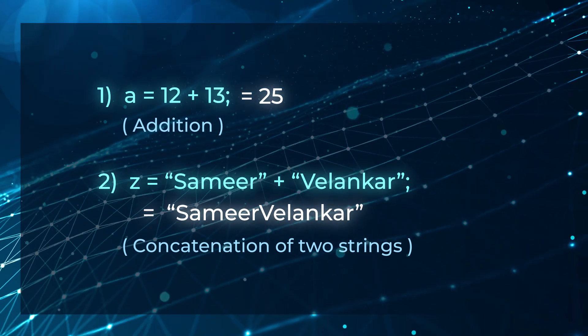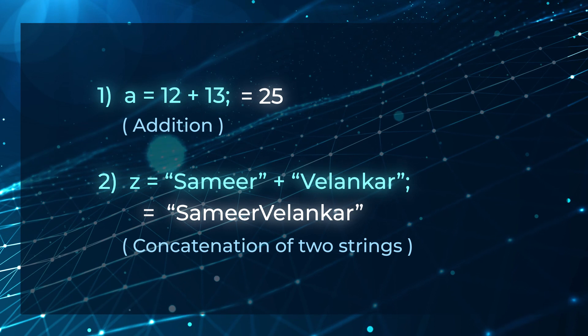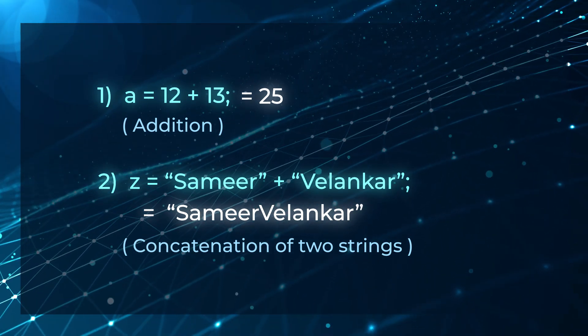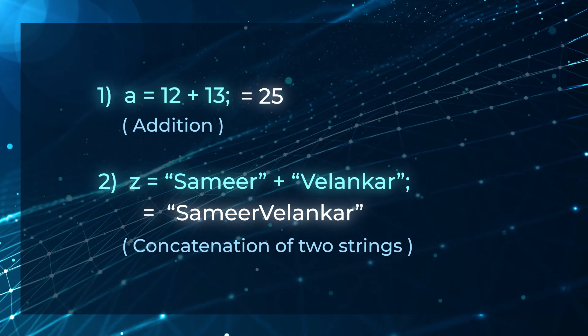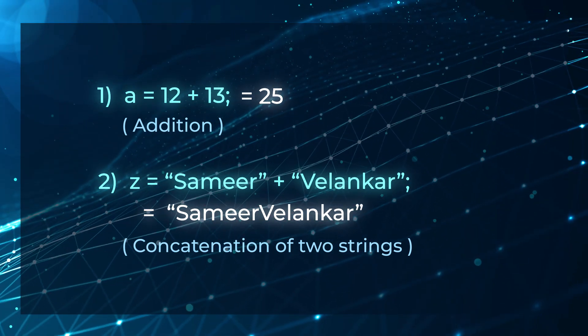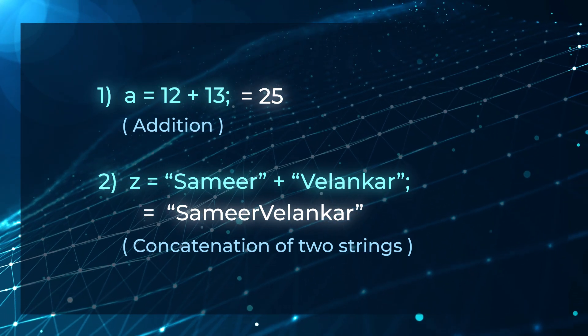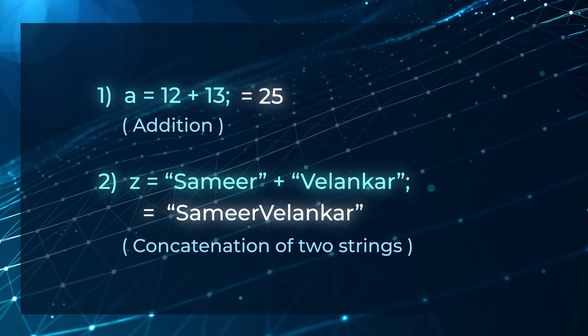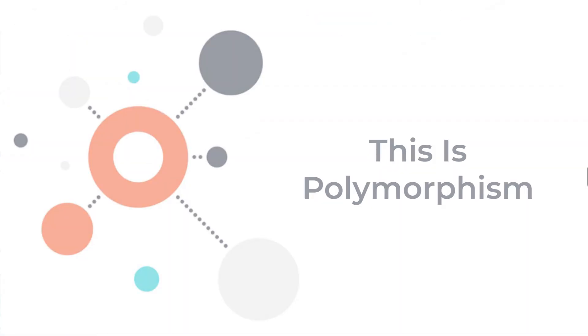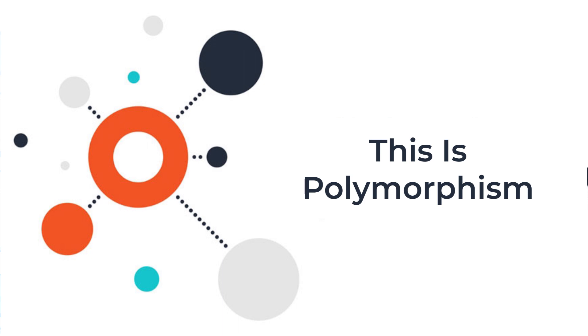Have a look at the two lines together. Both lines have the same operator, plus. But the meaning of the operator is completely different in these two different lines. In the first line, plus means add, but in the second line, plus means join or concatenate. The same symbol has multiple appearances or meanings — this is polymorphism.